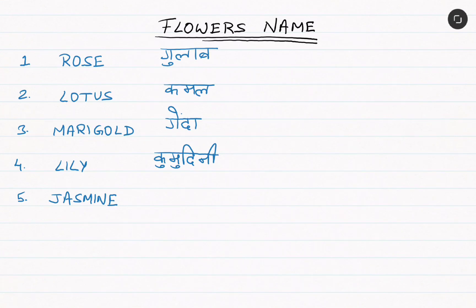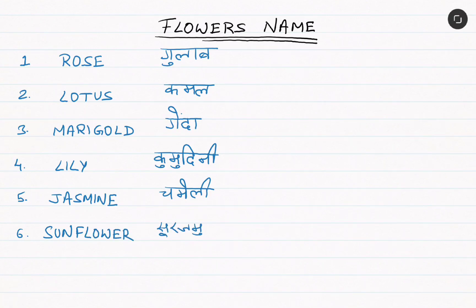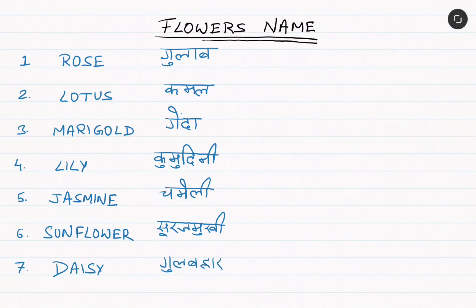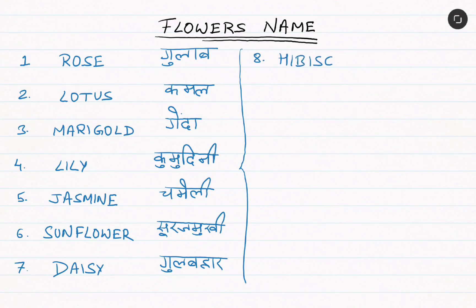Sixth: sunflower means surajmukhi. Seventh: daisy means gulbahar. Eighth: hibiscus, and in Hindi we call it gurhal.